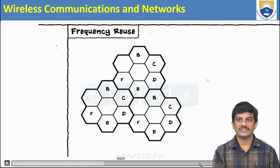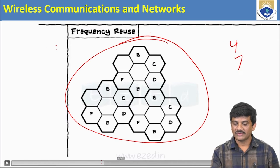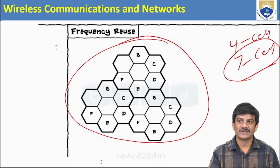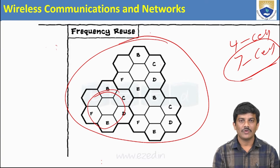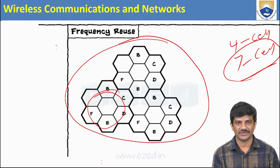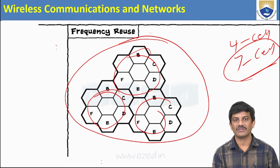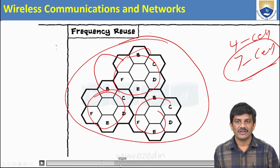This is frequency reuse. We have 4-cell clusters and 7-cell clusters. The 7-cell cluster is the standard cluster size. Every cell has its own base station. Like this, we can divide the total geographic area. Every cell having its own base station allows connection from one cell station to another base station. This is how cellular communication works.